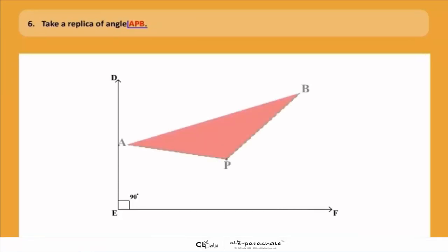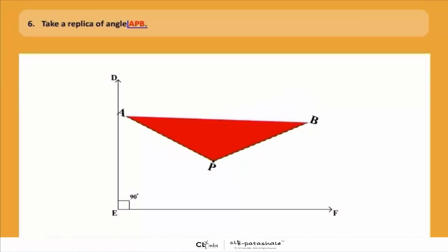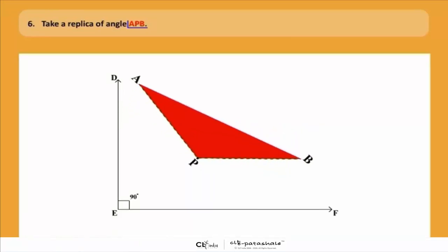Now children, the next step is you have to draw a right angle and name it as DEF on a paper. Very carefully observe the figure. The next step is you have to take a replica of angle APB as shown in the figure.